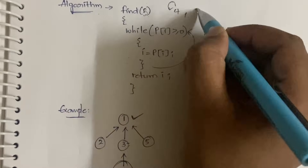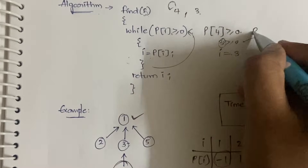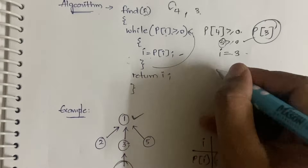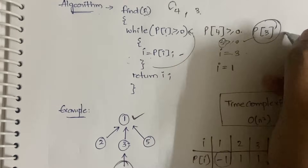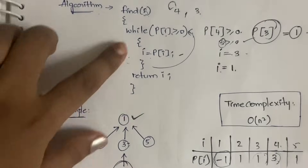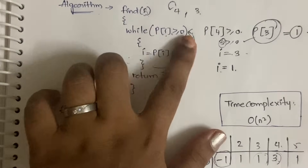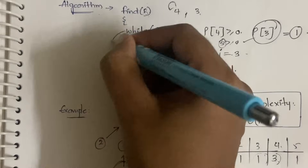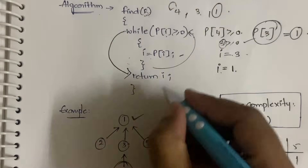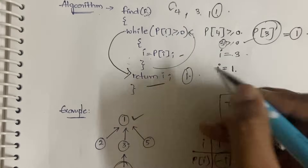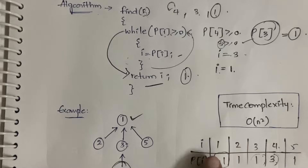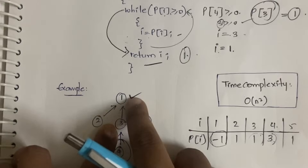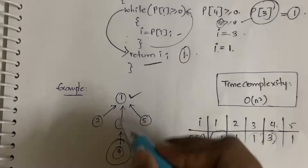Continuing: find(3), p[3] = 1, which is >= 0, so i becomes 1. Now find(1), p[1] = -1, which is not >= 0, so we exit the while loop. We return the current value of i, which is 1. So for element four, the root node returned is one. That's the find algorithm — you traverse up through parents until you reach the root.